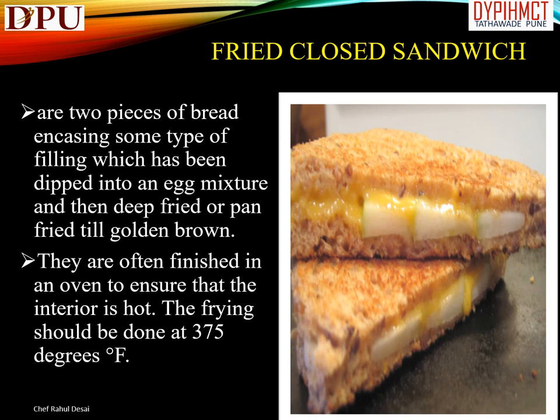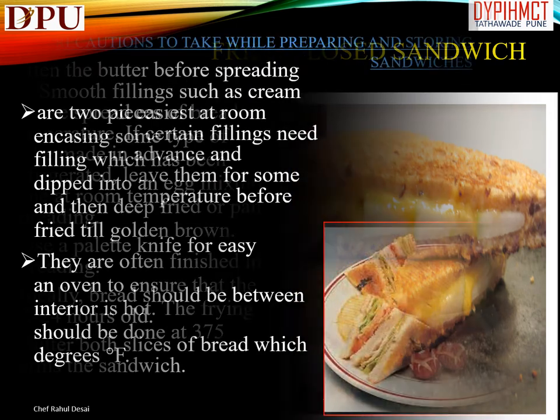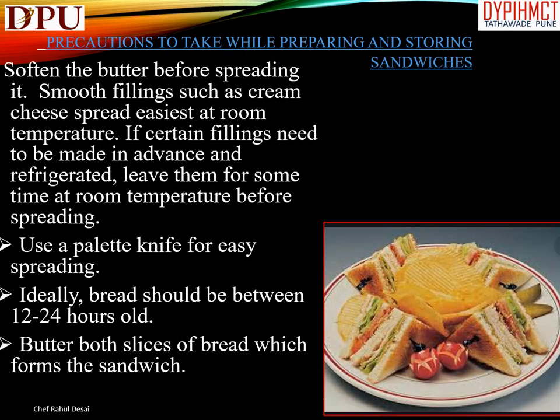Precautions to take while preparing and storing sandwiches: buy sliced bread wherever possible — it is neater and quicker. If slicing the bread yourself, pile up the slices in the order they have been cut. Use efficient filling for each sandwich. Meat should be free of all gristle and excessive fat. Beware of dry meat — moisten with lemon juice, fish mayonnaise, vegetables, or aspic jelly. When making roast beef sandwiches, it is best to leave the meat underdone.